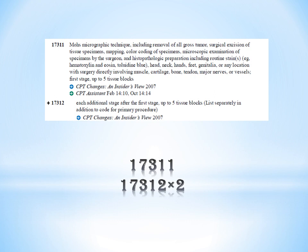For neck, the code is 17311 — Mohs micrographic technique — which covers head, neck, hands, feet, for the first stage up to 5 tissue blocks. So stage 1 code is 17311. You have 3 stages total, meaning 2 additional stages. The code for each additional stage after the first is 17312. So you give 17312 × 2 for stages 2 and 3.